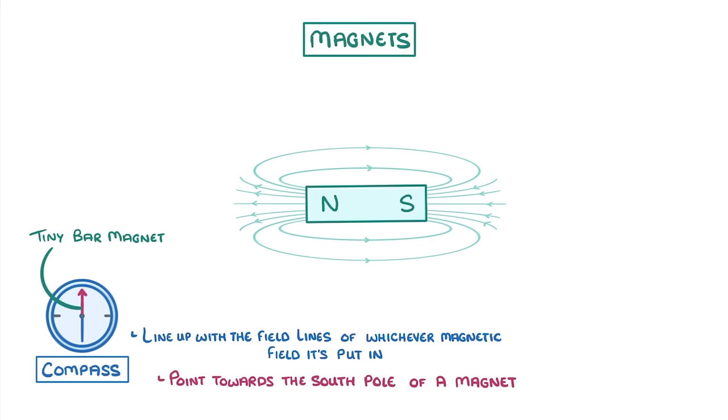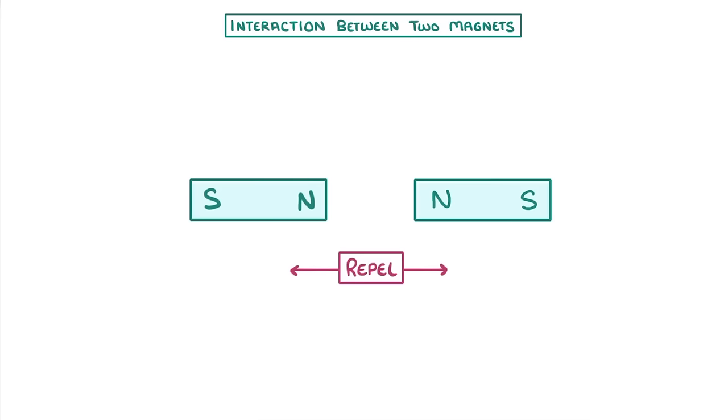The last thing we need to look at is how to show the interaction between two different bar magnets. As you know, if you push the north poles of two magnets together then they'll repel each other, which is what makes it hard to squeeze them together. We can see why this is if we draw the field lines between them.